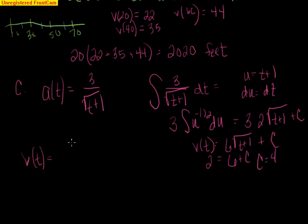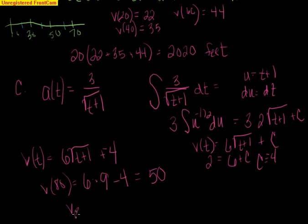So now we have this much nicer-looking velocity equation. My velocity equation is 6 radical T plus 1 minus 4. Now it wants to know, what about at 80? Which one's going faster? So at 80 for this one, when I put 80 in, I get the square root of 81, which is 9. So I get 6 times 9 minus 4, which is 54 minus 4, which is 50. So the velocity of rocket B at 80 is 50 feet per second.